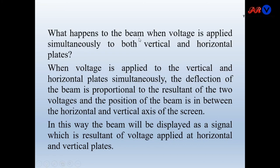There is a question: what happens to the beam when voltage is applied simultaneously to both vertical and horizontal plates? The answer is: when voltage is applied to the vertical and horizontal plates simultaneously, the deflection of the beam is proportional to the resultant of the two voltages. The position of the beam is in between the horizontal and vertical axis of the screen. In this way, the beam displays a signal which is the resultant of the voltage applied at the horizontal and vertical plates.